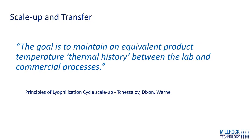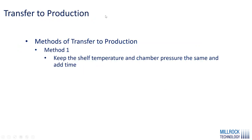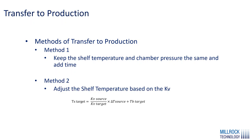For scale-up and transfer, the goal is to maintain an equivalent product temperature or thermal history between the lab unit (the source) and your commercial process (typically production). There are two consistent transfer methods: first, keep the shelf temperature and chamber pressure the same and add about 30% time to the primary drying cycle. Second, adjust the shelf temperature based on the known KV values for the source in the lab and the target in production. There is a quick equation showing how the shelf temperature is adjusted based on the KV of the two systems.